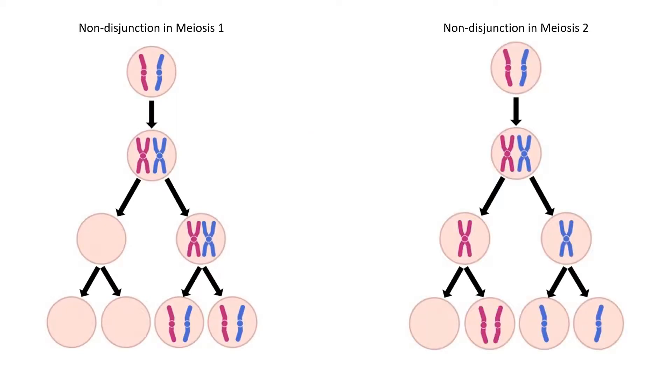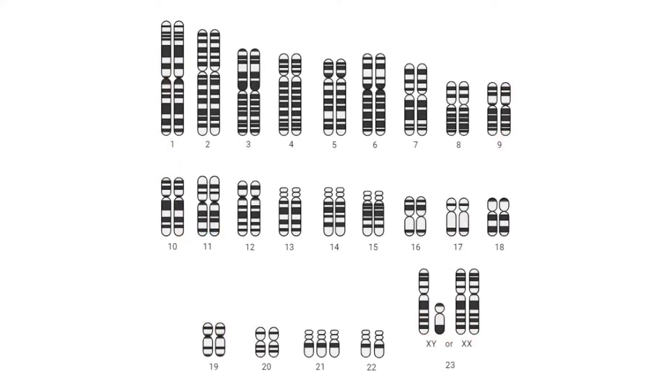It results in gametes with an abnormal number of chromosomes. Specifically for Trisomy 21, it is a failure of properly separating chromosome 21 that results in a gamete with two copies of chromosome 21. When this gamete is fertilized with another gamete, the resulting zygote ends up having 47 chromosomes, 22 chromosome pairs but one triplet of chromosome 21.